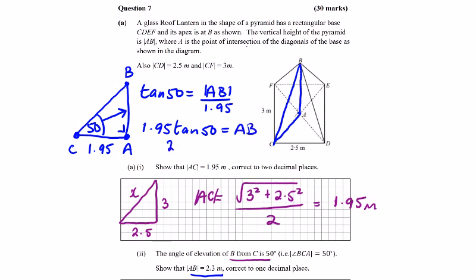Typing this into a calculator, you get 2.32 is the length of AB. We are asked correct to one decimal place, so 2.3 is correct.